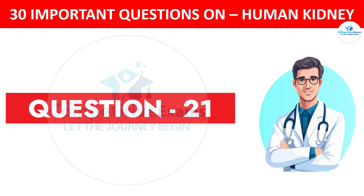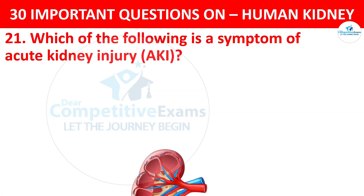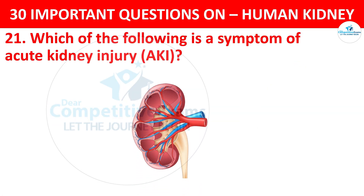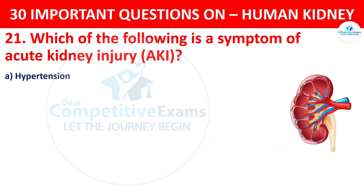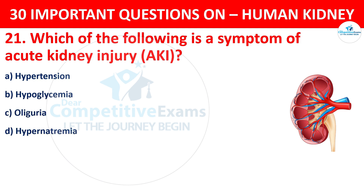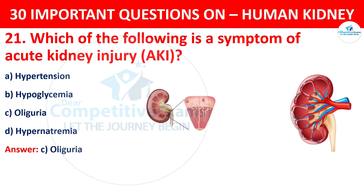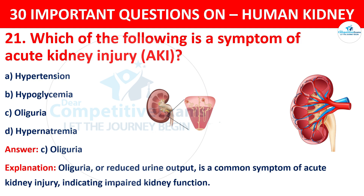Question number 21. Which of the following is a symptom of acute kidney injury (AKI)? Your options are hypertension, hypoglycemia, oliguria, or hypernatremia. The correct answer is C, that is oliguria. Oliguria — reduced urine output — is a common symptom of acute kidney injury, indicating impaired kidney function.